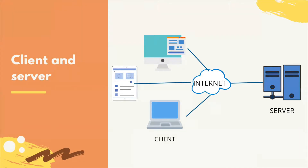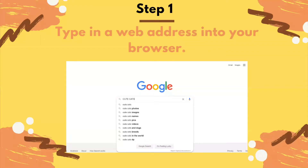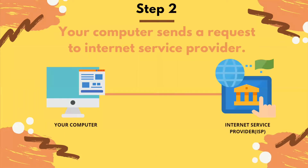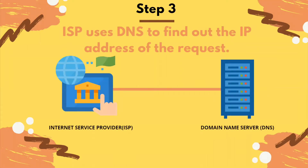Now, what exactly happens when you type a URL into your web browser? Whenever you send a request to the internet, the request is broken down into smaller pieces called packets, and is then sent to your internet service provider. Once the ISP receives these packets, it uses a Domain Name Server, or DNS, to find out the IP address of the website you are requesting.